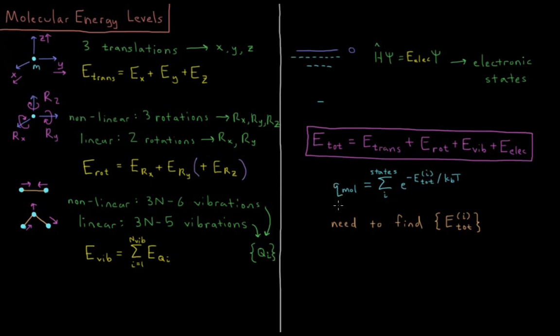So for molecules, we can get a partition function for a molecule, which would be the sum over all of the states of the Boltzmann factor of those states. So e to the minus total energy of that state divided by Boltzmann constant times temperature. So what we need to do is find what the set of the total energies are for all the states of these individual molecules so that we can get partition functions, which will be the focus of the next few videos.